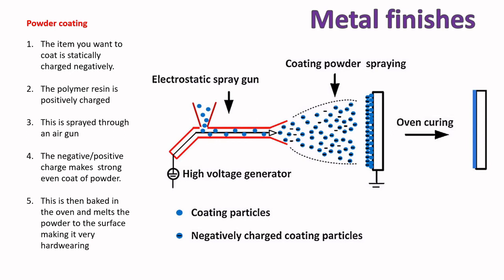Powder coating is commonly used for things like mountain bikes. The item to be coated is negatively charged (cathode) and the polymer resin used as protection is positively charged (anode). The polymer is sprayed through an air gun, and the charge difference causes the powder to coat evenly around the negatively charged metal. Once done, it's baked in an oven, melting the powder onto the surface to create an incredibly hard-wearing finish — which is why a mountain bike dents but the paint doesn't chip.